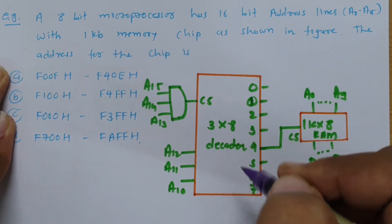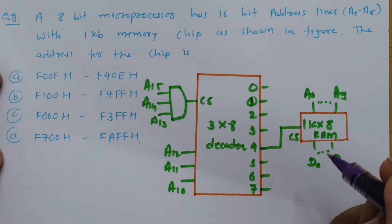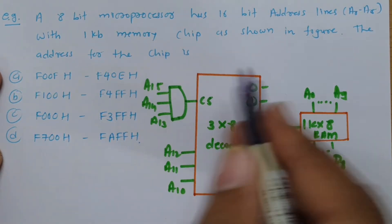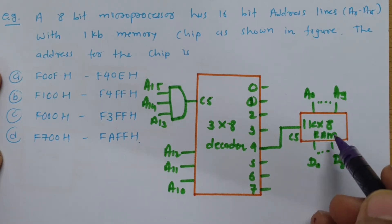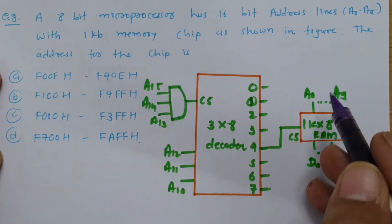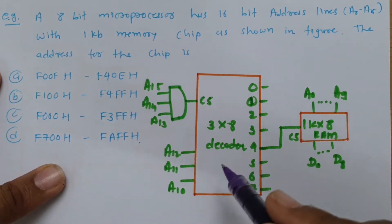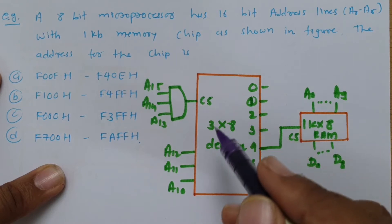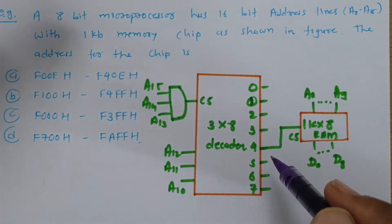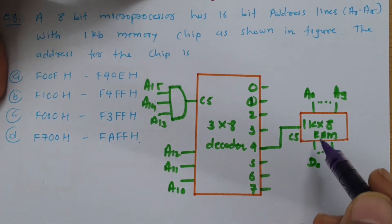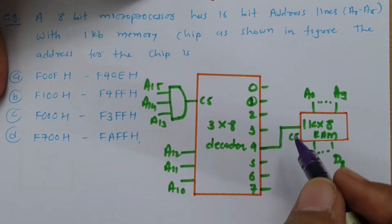This problem is based on memory mapping where we need to identify the starting and ending address of the given chip. The chip is 1K×8, connected with address lines A0 to A9, and interfaced with a 3×8 decoder. The fourth terminal of the decoder is connected to the chip select of this 1K×8 memory chip.